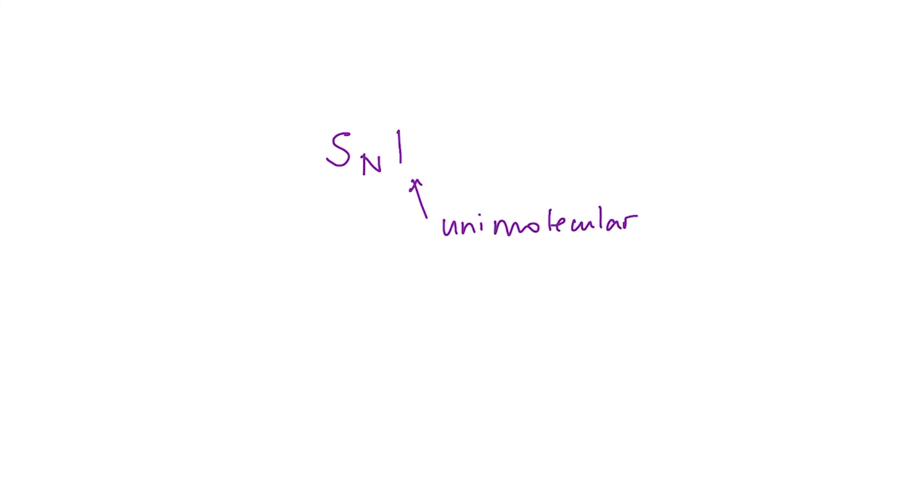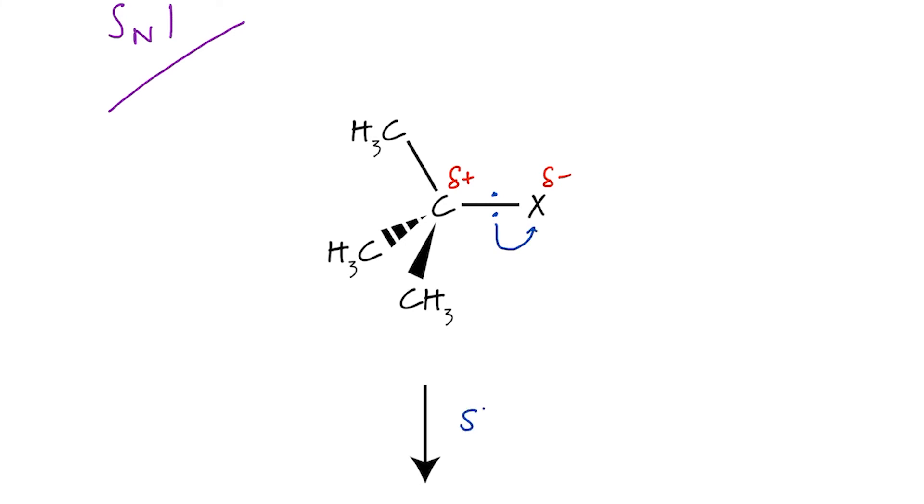Substitution nucleophilic unimolecular. In this type of nucleophilic substitution, the rate of reaction depends only on one molecule. And that one molecule is the tertiary haloalkane. In the SN1 mechanism, the first step only involves the haloalkane. And it involves breaking of the carbon halogen bond. In this case, X stands for the halogen. It could be chlorine, bromine or iodine. So, step number one, the halogen leaves. And this is a slow or rate determining step.